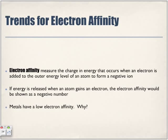Trends for electron affinity. Electron affinity measures the change in energy that occurs when an electron is added to the outer energy level of an atom to form a negative ion. If energy is released when an atom gains an electron, the electron affinity would be shown as a negative number.